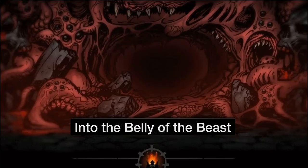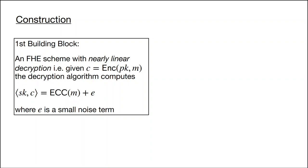The rest of the talk is dedicated to showing how to construct split FHE. Our construction relies on two main building blocks. The first is a standard FHE scheme with a very useful property we call nearly linear decryption, which essentially says that the decryption algorithm mainly consists of a linear operation. Given a ciphertext C encrypting message M, we can compute a linear function over the secret key that returns an encoding of M plus a small noise term E. The key point is that a linear function allows us to recover an encoding of the message M.